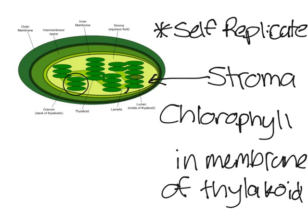Only primary producers have chloroplasts. Think of plants — essentially, living things that don't eat other living things. They have chloroplasts to make glucose and H2O. What chloroplasts do is help with photosynthesis.